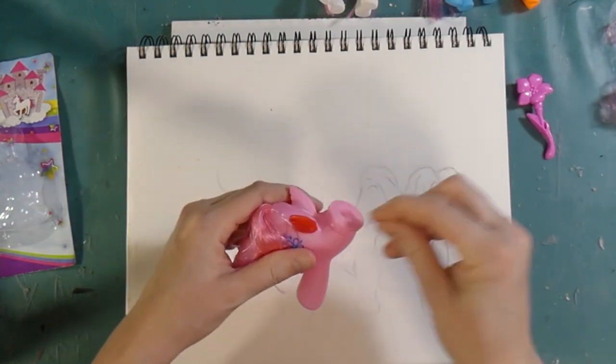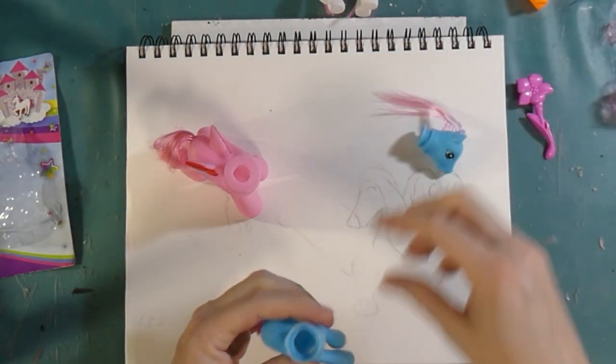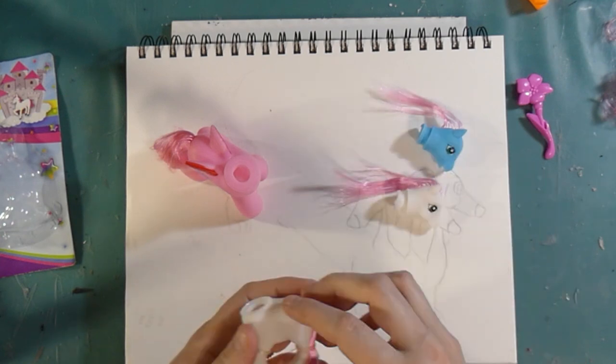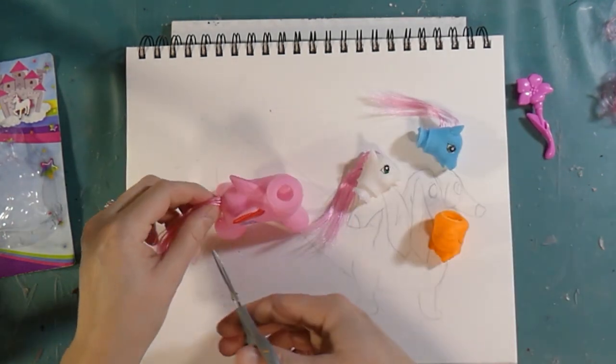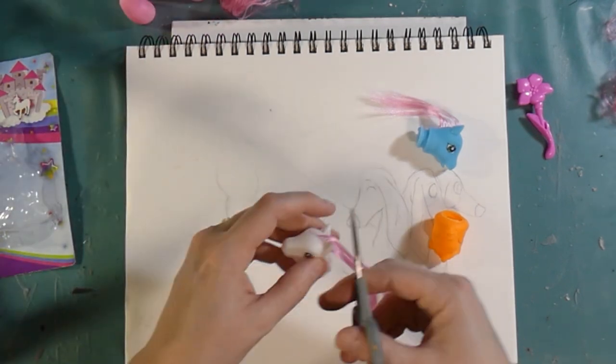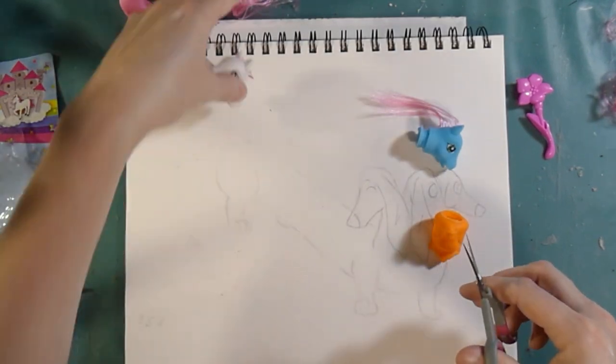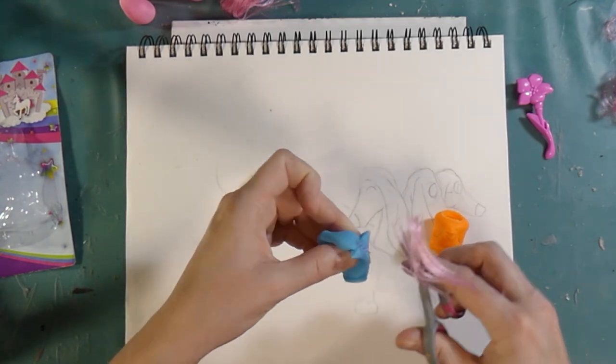So with this one, I need the body. I don't need the head, so the head's going to be put off to the side, whereas with the little ones, I need the heads. And I actually decided to use all three. So now I need to prep the ponies. I have to get rid of all the tails and the manes.